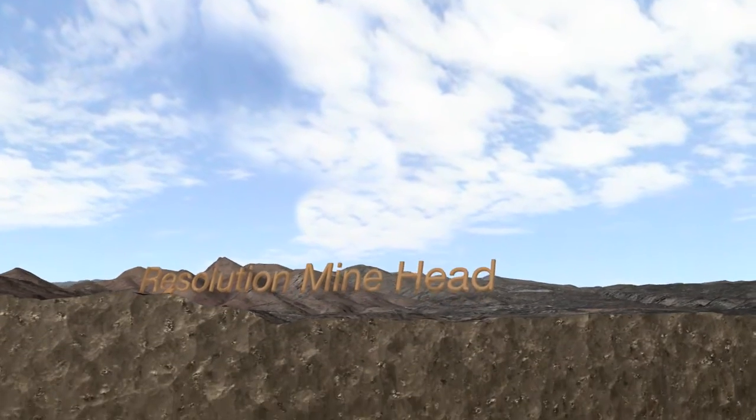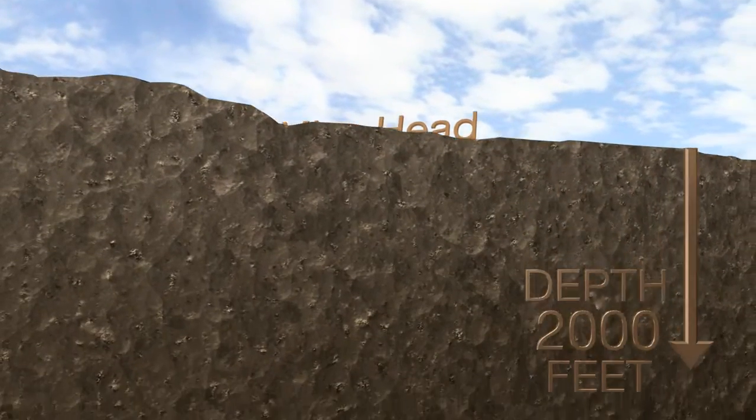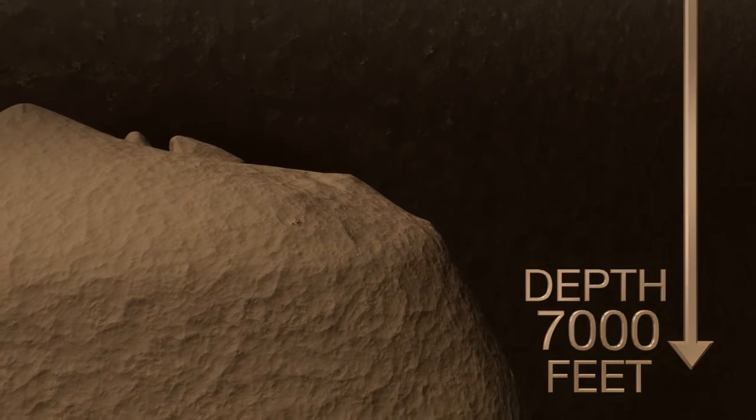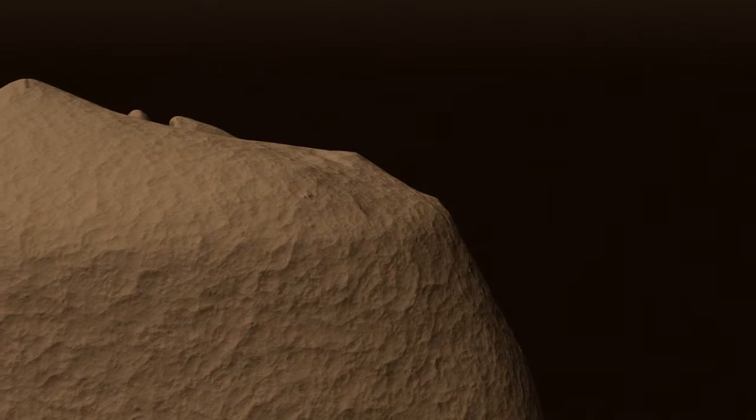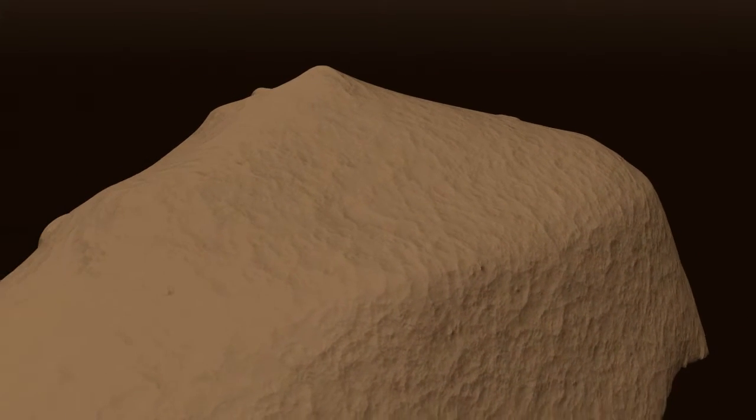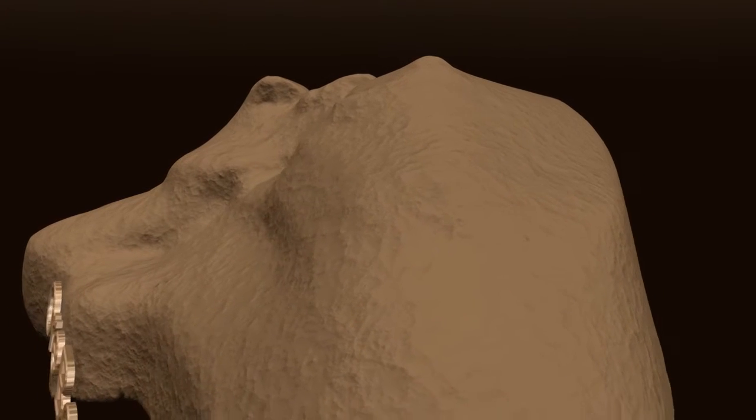The ore body sits 7,000 feet beneath the desert floor and approximately one mile behind an escarpment or cliff known as Apache Leap. Here at the Resolution Mine, panel caving is the safest and most productive way to mine this deep, large, low-grade deposit.